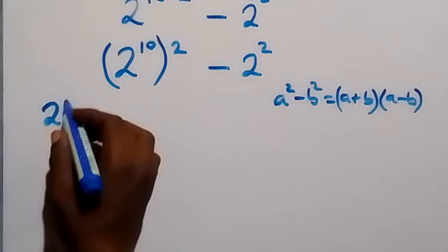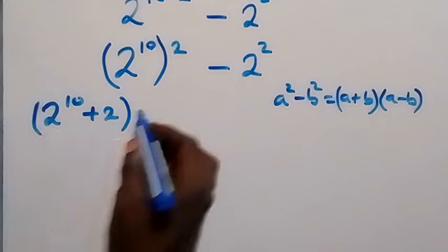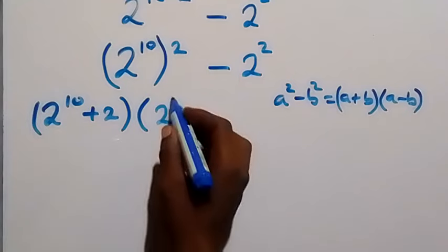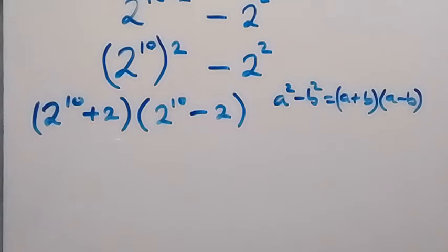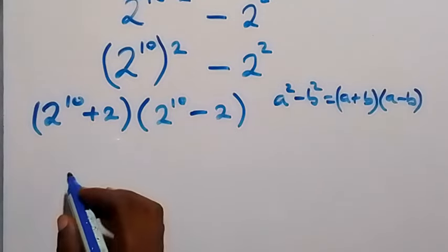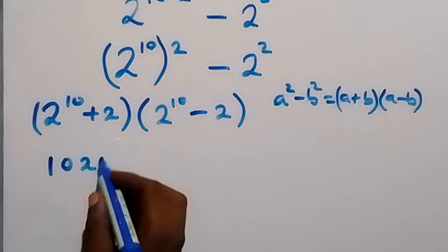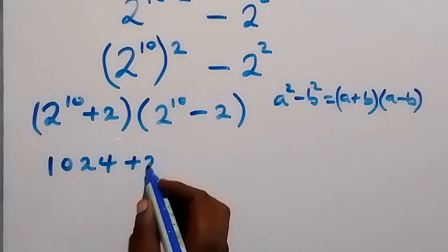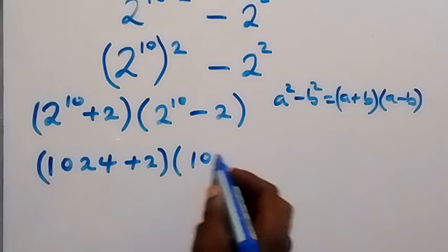2 raised to power 10 plus 2, multiply by 2 raised to power 10 minus 2. Then 2 raised to power 10 is 1024, so we have 1024 plus 2 multiply by 1024 minus 2.